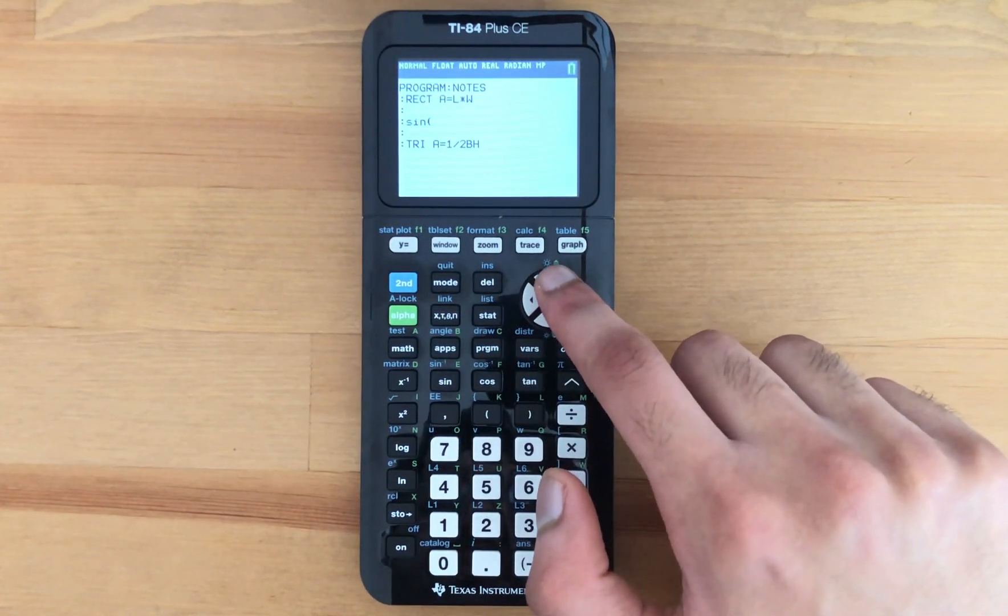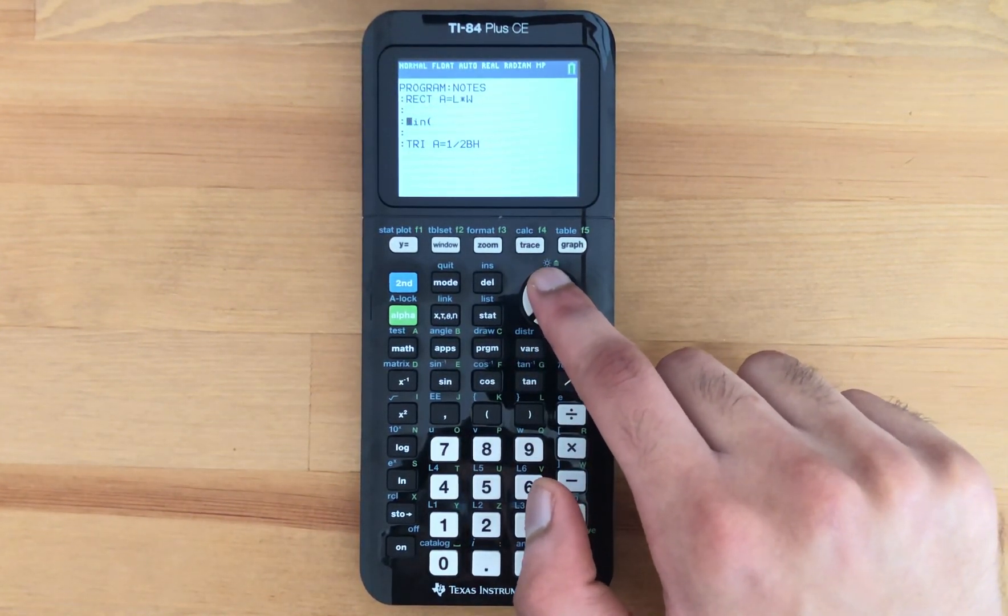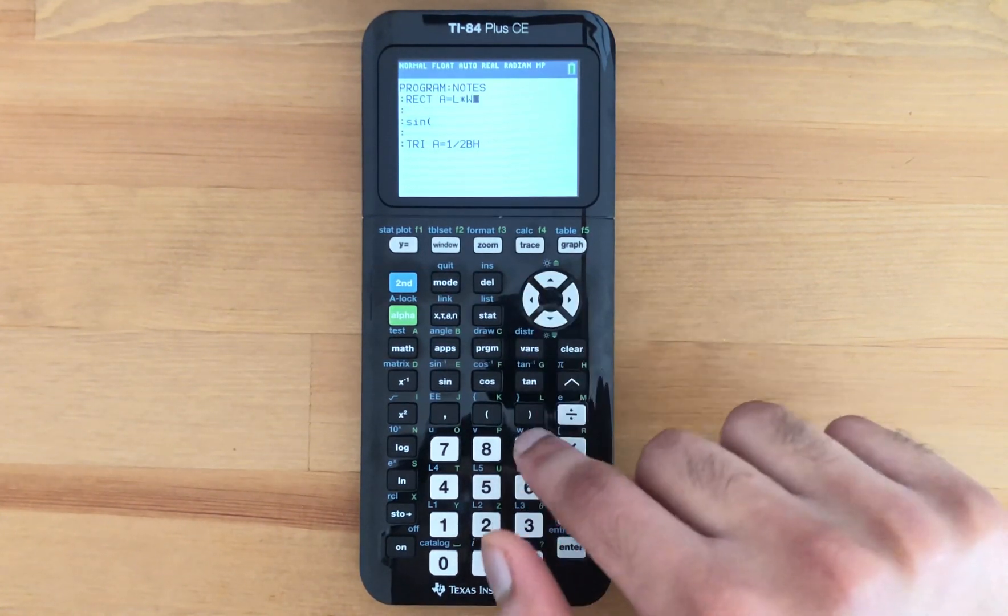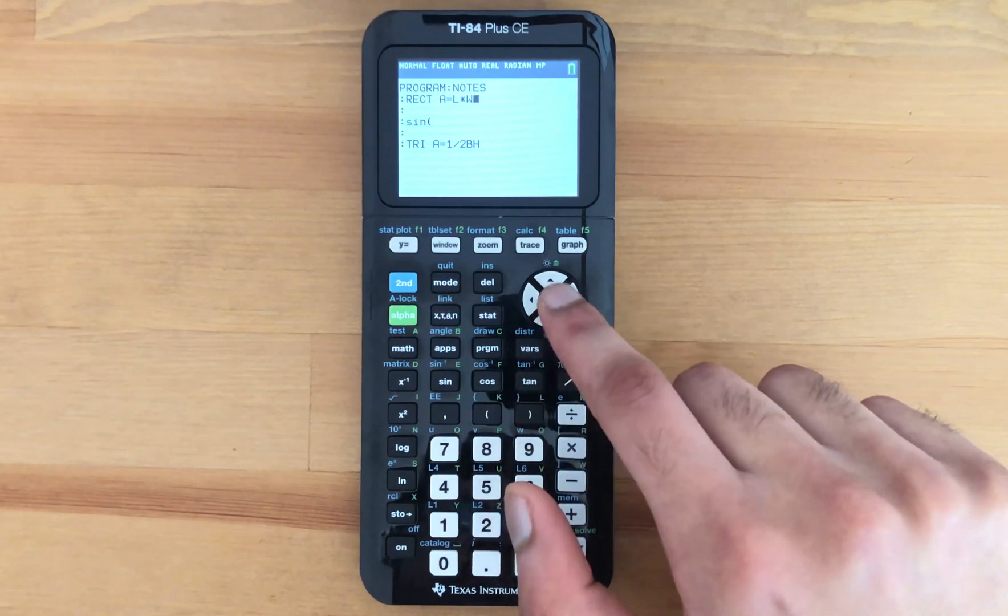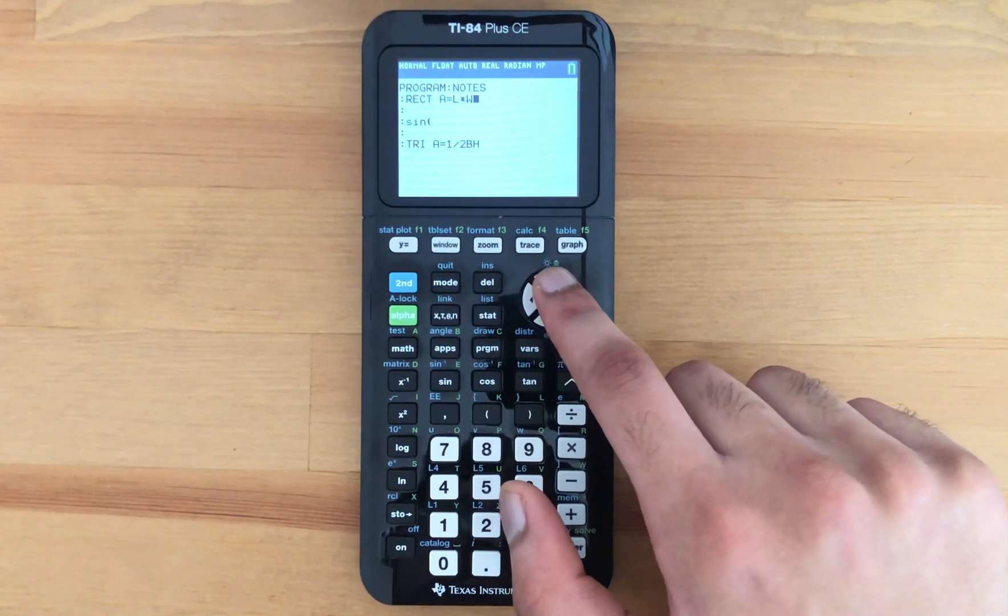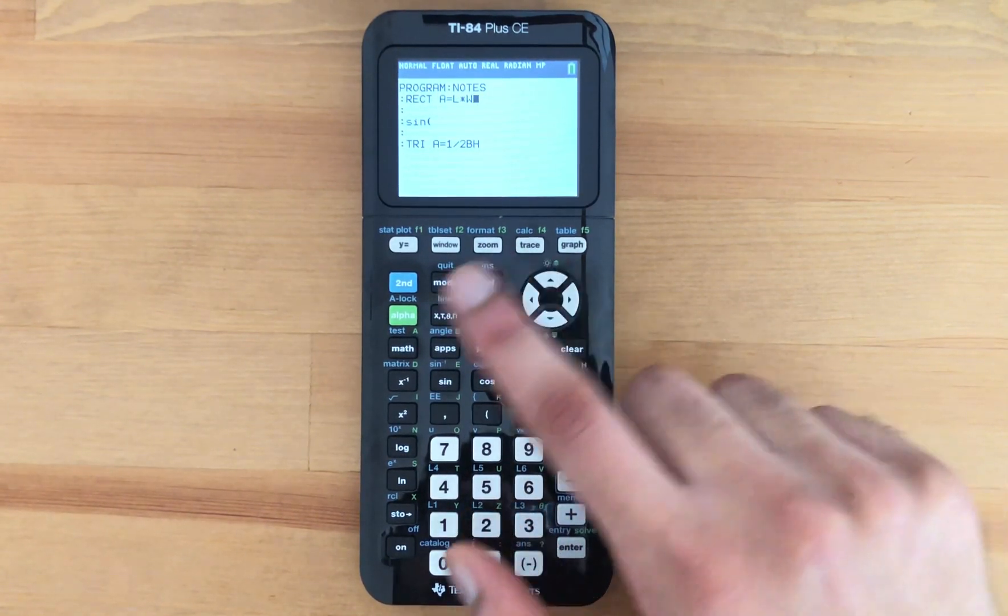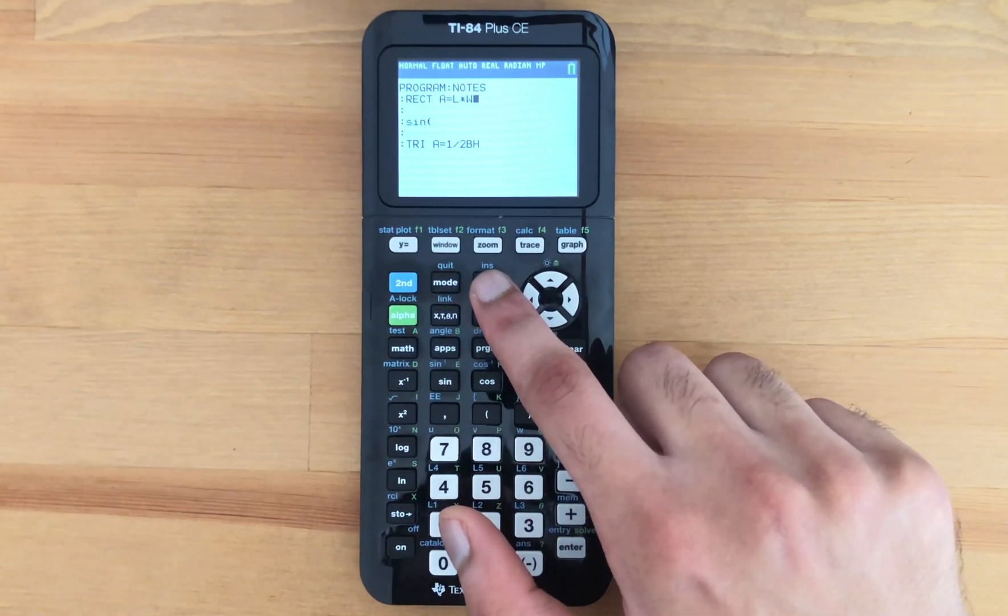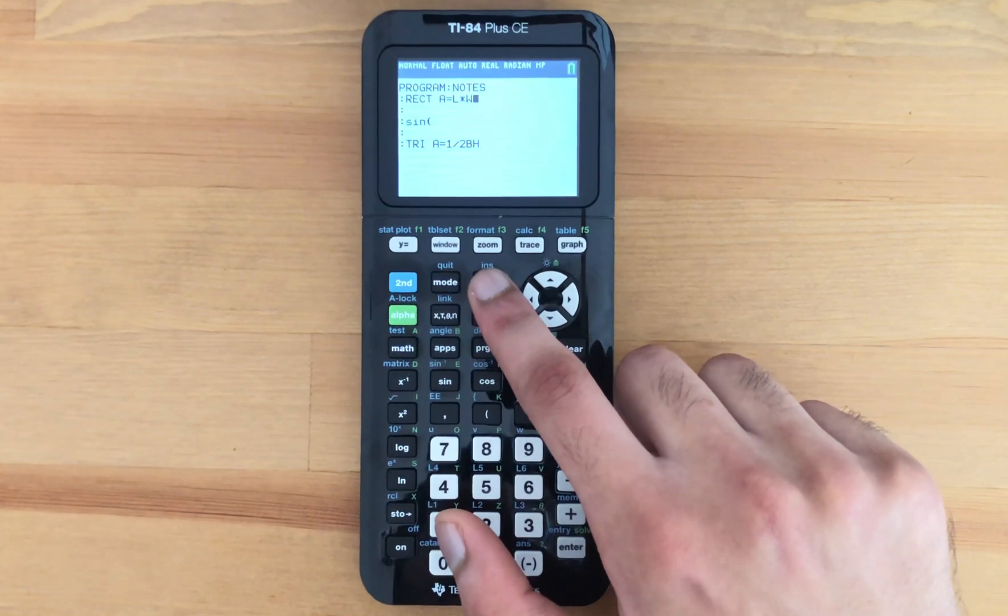So if I wanted to delete this sine function and also keep the remaining notes I have, what I want to do is simply go to the top of the formula you want to save, go towards the end, and then press delete. That deletes the line after.